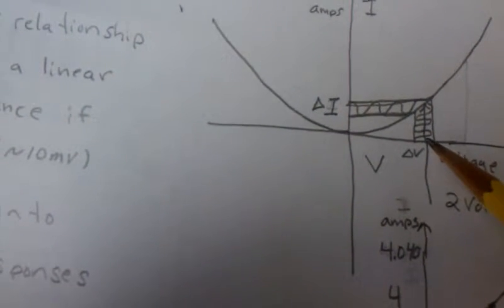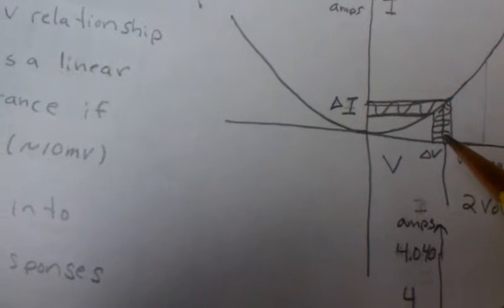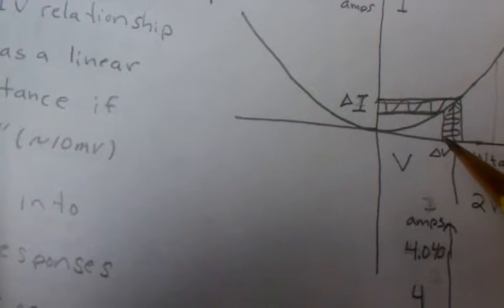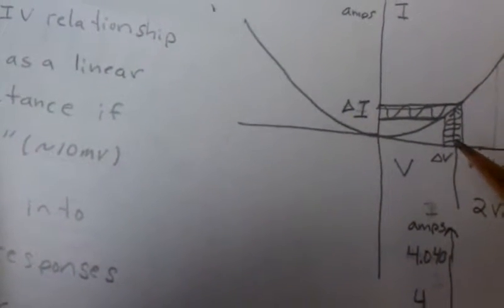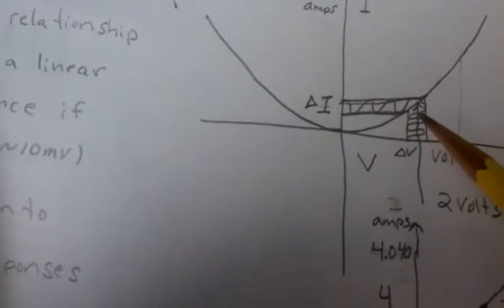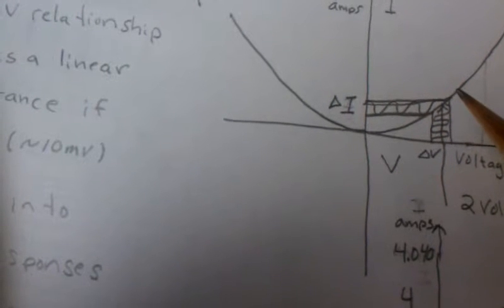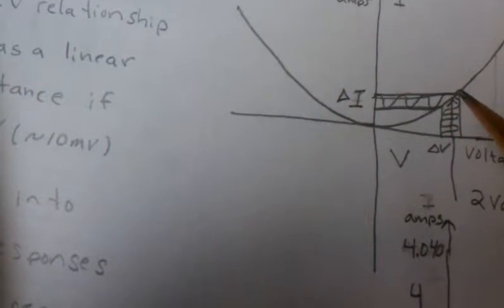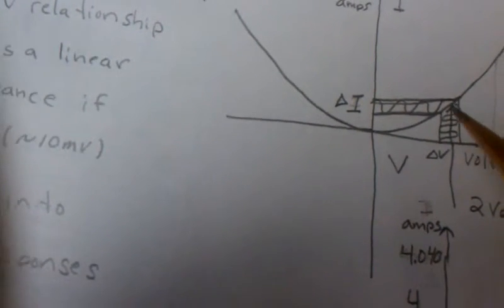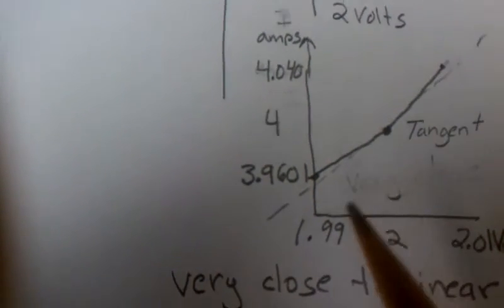But notice if I were at 2 volts and only allowed myself to swing minus 10 millivolts to 2 plus 10 millivolts, I would get a delta I. Look at these two areas, these two points. If I were to zoom in on that area...